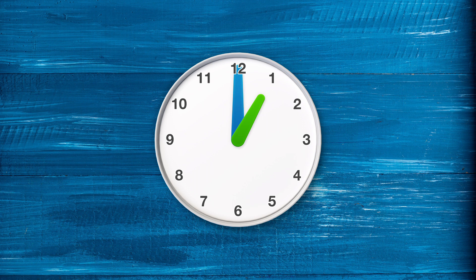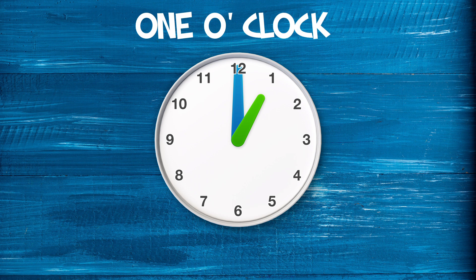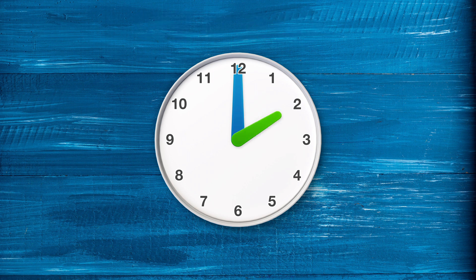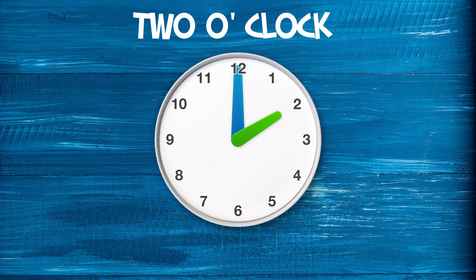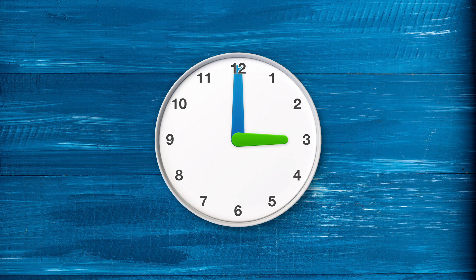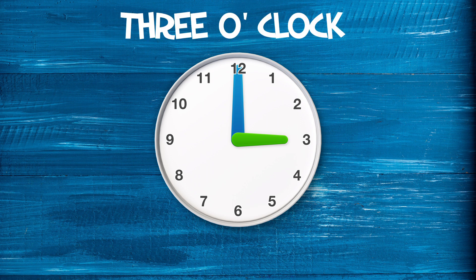When the small hand is in front of the number 1, it is 1 o'clock. When the small hand is in front of the number 2, it is 2 o'clock. When the small hand is in front of the number 3, it is 3 o'clock.